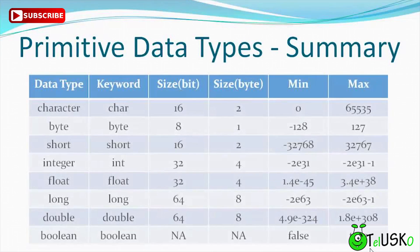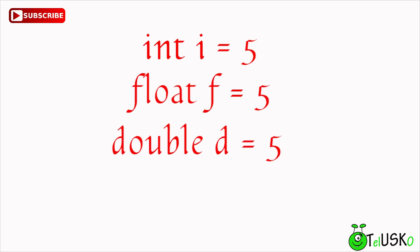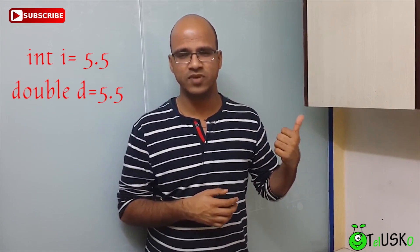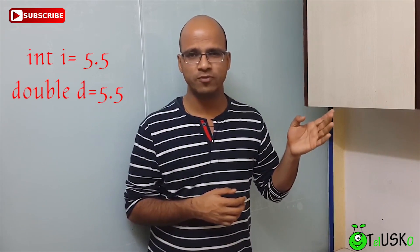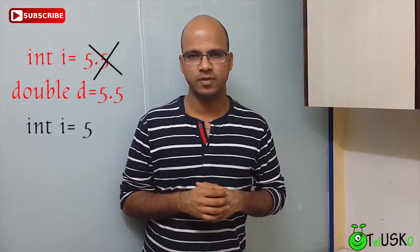Now let's say you have a value 5 stored in an int. You can assign that value to a float variable or a double variable, since their size is sufficient. But can you assign a double value to int? It's like putting your laptop inside a mobile cover — you'd have to cut it down to fit. So when you store 5.5 (a double value) inside an int, you lose the 0.5 and only store 5.